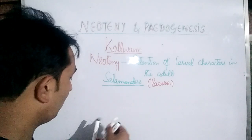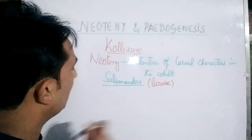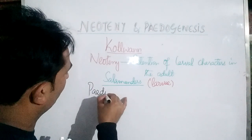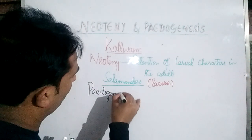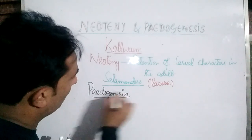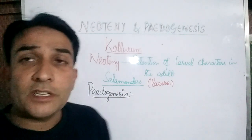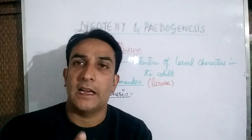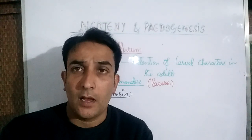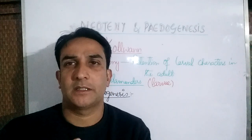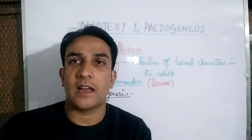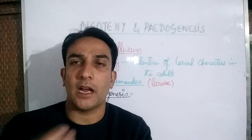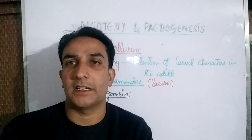The second term coined by Colvin is Pedogenesis. Usually reproduction is carried out by adults and not larvae, but if reproduction occurs in the larval stage, which is very unusual, we call this as Pedogenesis.